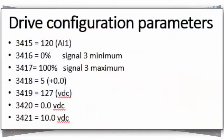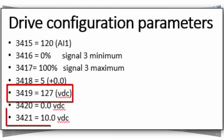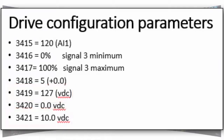Here's a list of the associated parameters for line 3. All we are concerned with is 3419, which will be changed to 127 which is VDC, and 3421 will be changed to 10 volts DC.